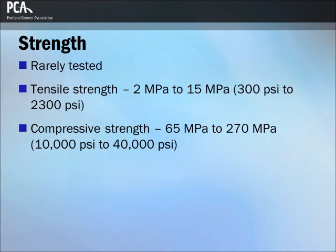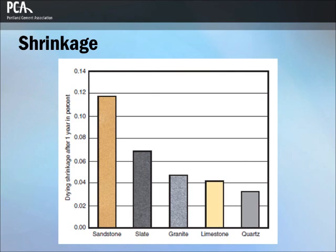The strength of an aggregate is rarely tested and generally does not influence the strength of conventional concrete as much as the strength of the paste and the paste-aggregate bond. Aggregate tensile strengths range from 2 MPa to 15 MPa (300 PSI to 2,300 PSI) and compressive strengths from 10,000 PSI to 40,000 PSI. Different aggregate types have different compressibility, modulus of elasticity, and moisture-related shrinkage characteristics that influence the same properties in concrete.